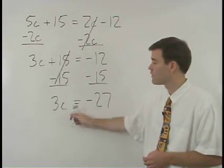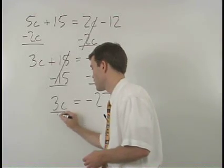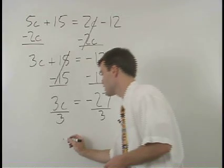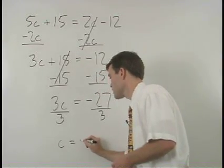To get c by itself, just divide both sides by 3, and c equals negative 9.